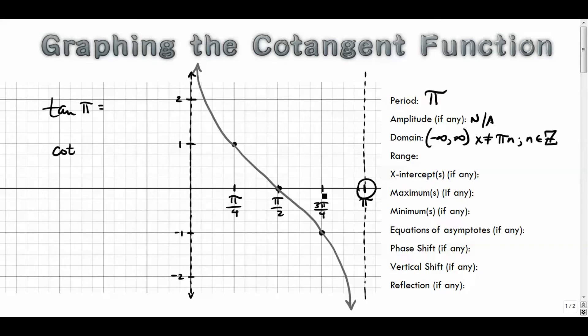The range is everything, so negative infinity to infinity. X-intercept, π/2 comma zero, it's right here. The maximum, there isn't any. Minimum, there isn't any. Asymptotes, x equals zero and π. And of course, it would go on forever, but we'll only list those two for right now. And these transformations we'll come back to when we get to our next transformation set of videos.